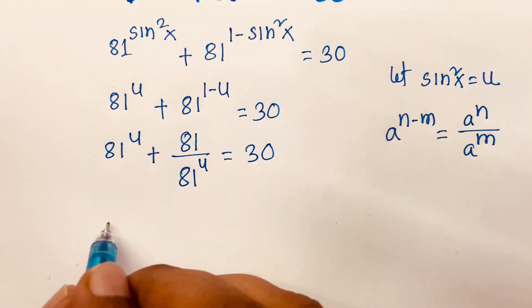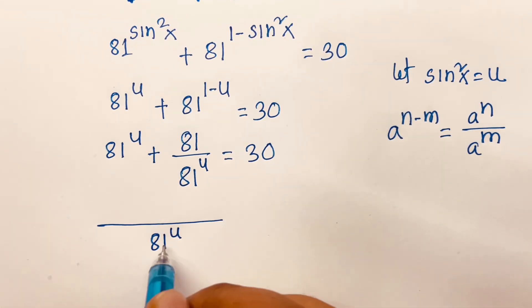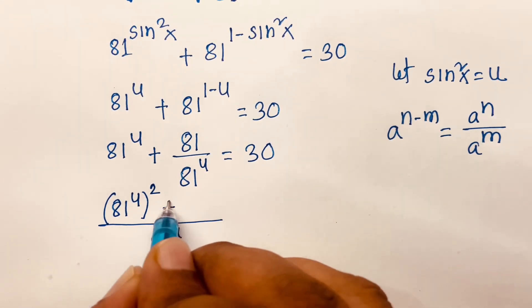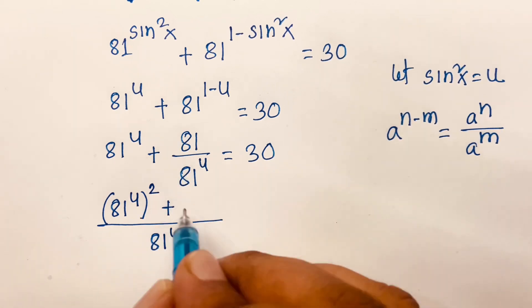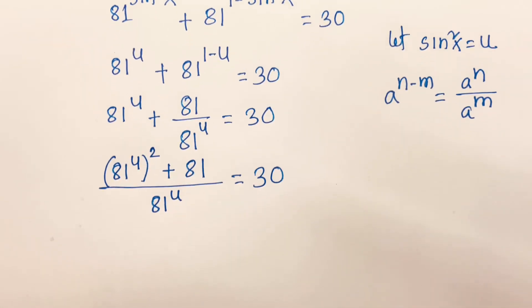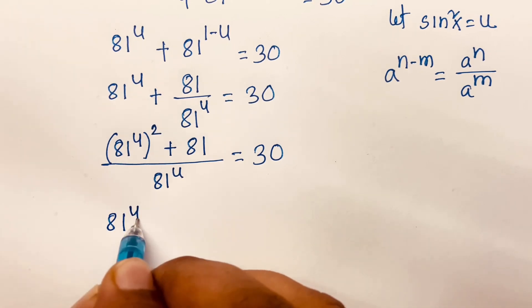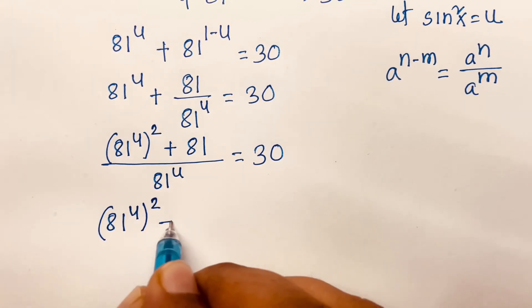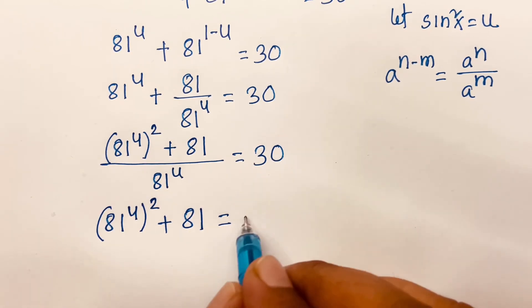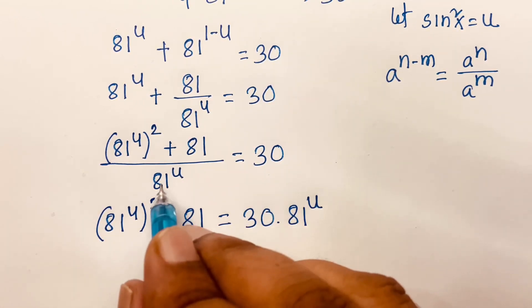Then I can say here is 81 power u, squared plus 81, divided gives 1, so 1 times 81 is 81, is equal to 30. Then 81 power u squared plus 81 is equal to 30 times 81 power u. I just multiply both sides by 81 power u.